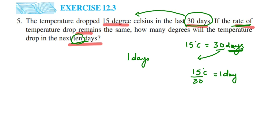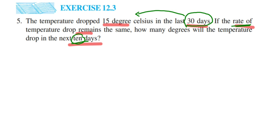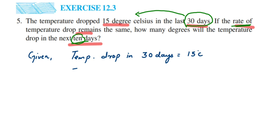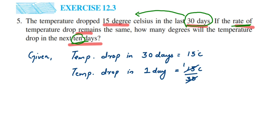I hope it's clear why we're dividing. If you can frame what is given in the question, you can easily figure out which number to divide. So, given: temperature drop in 30 days equals 15 degrees Celsius. Therefore, temperature drop in one day equals 15 degrees Celsius divided by 30. We cancel: 15 divided by 30 gives us one half.